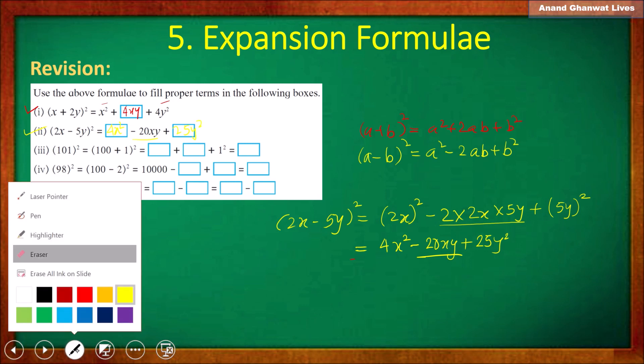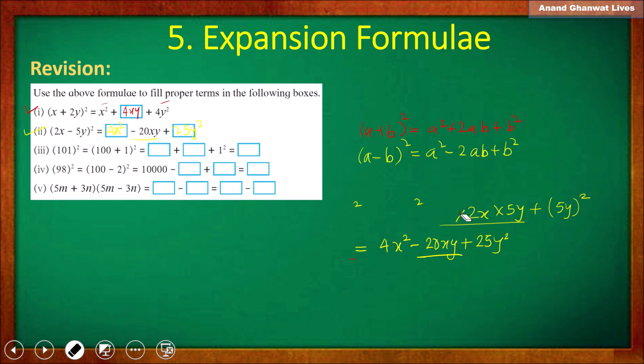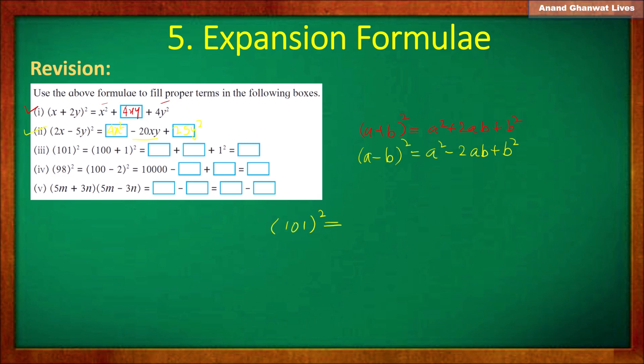Next question: the square of 101. We should express 101 in terms of the addition of two simple terms so we can find the square easily. So let us express 101 as (100 + 1) and find its square.